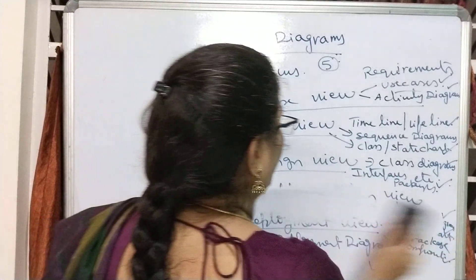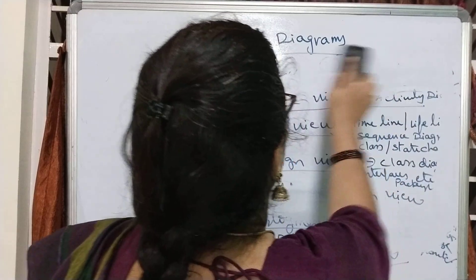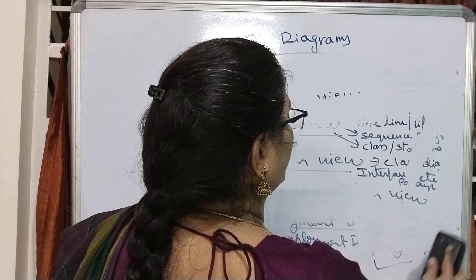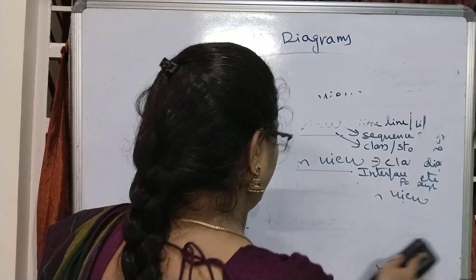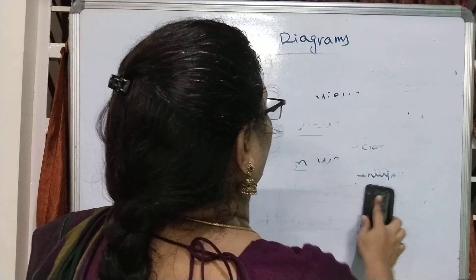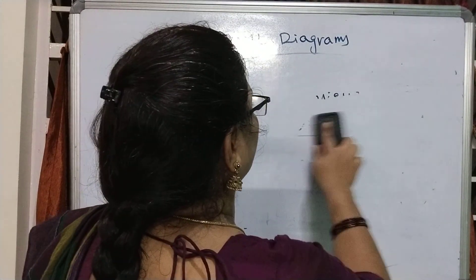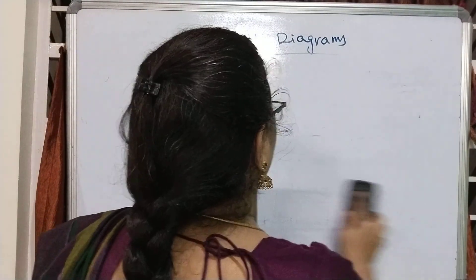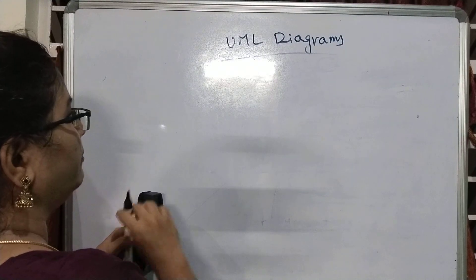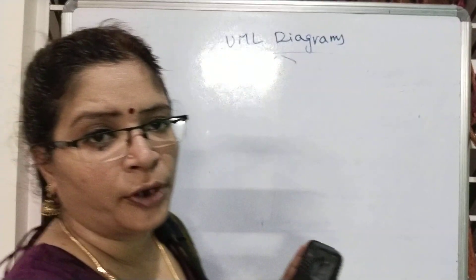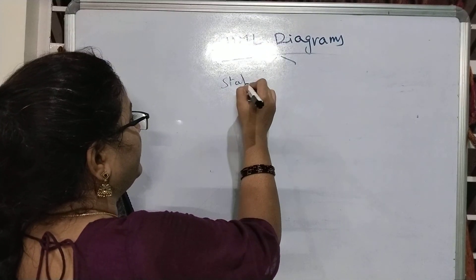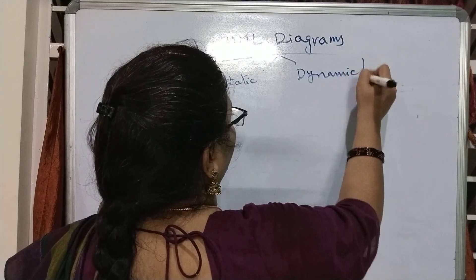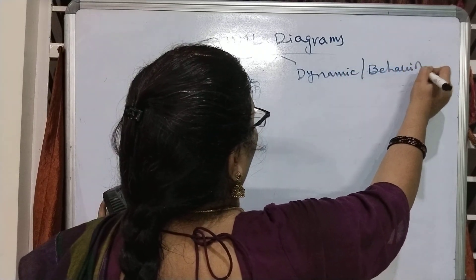Now let us see how these diagrams are differentiated and list out the various kinds of diagrams, and how this listing can be divided into various types. UML diagrams can first of all be classified into two types: one is the static diagram, and another one is the dynamic or behavioral diagram.